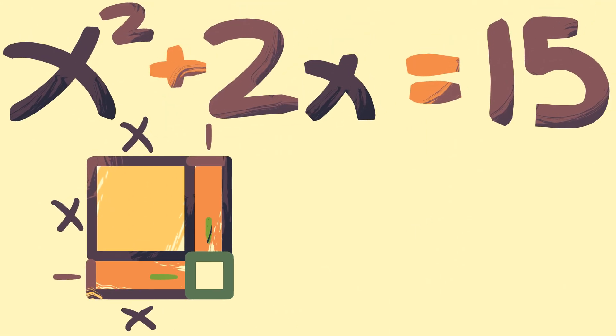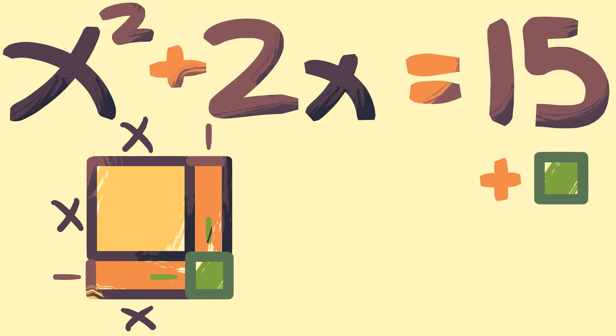Let's go ahead and complete the square by adding our new 1x1 square to both sides of this equation. Of course, the area of a 1x1 square is just 1, so our equation now reads, a square with side length x plus 1 has an area of 16.